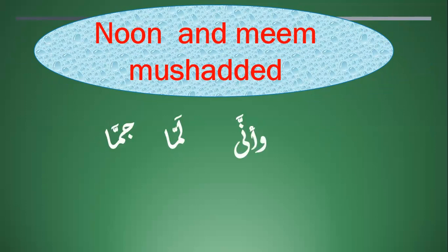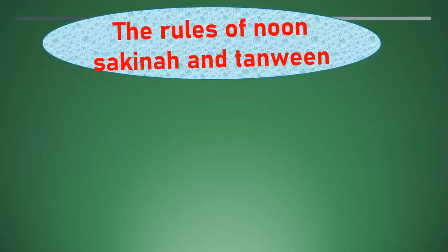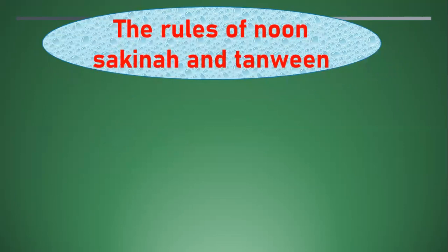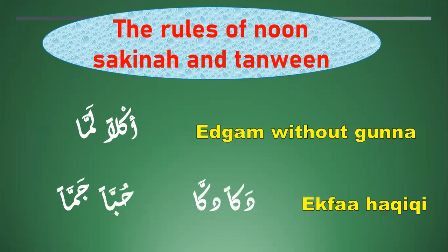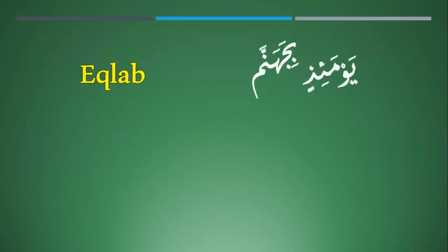The rules of non-sakinah and Tanwin: number one, number two, number three. Please repeat after me.